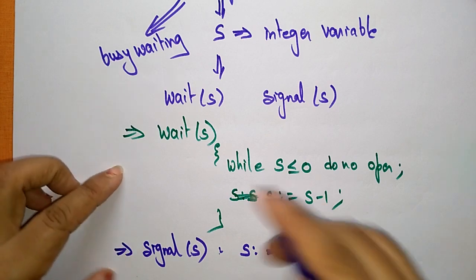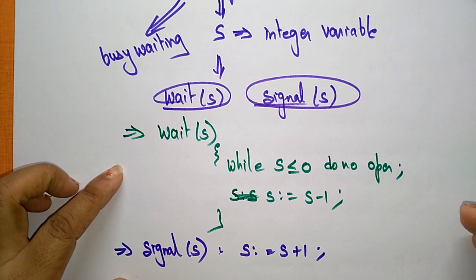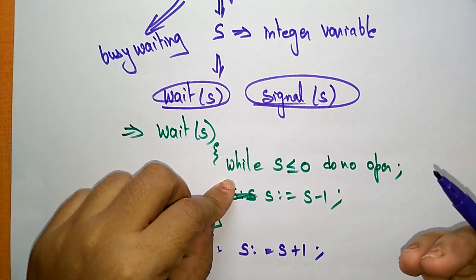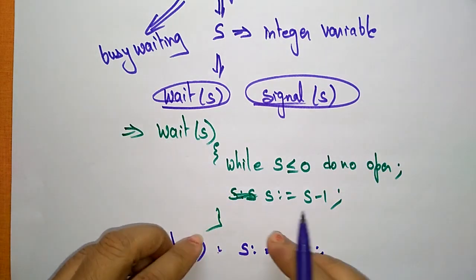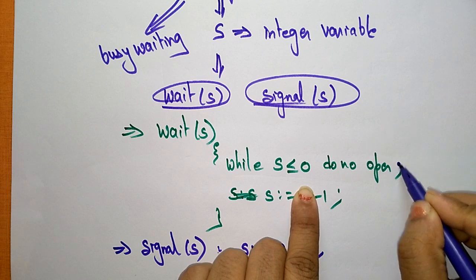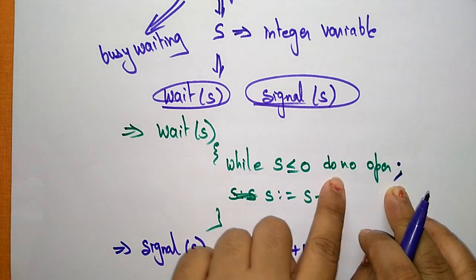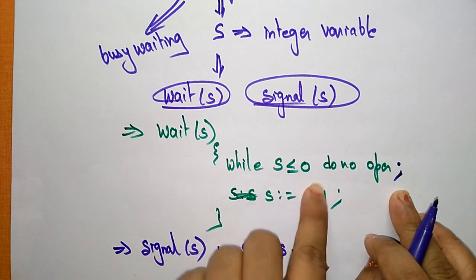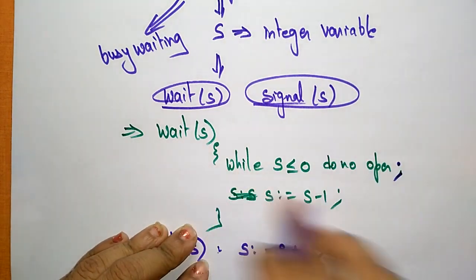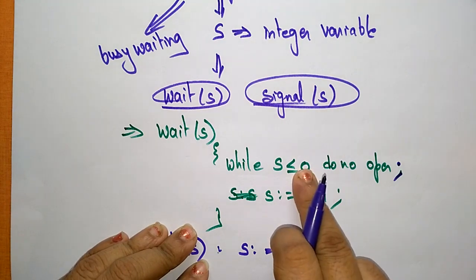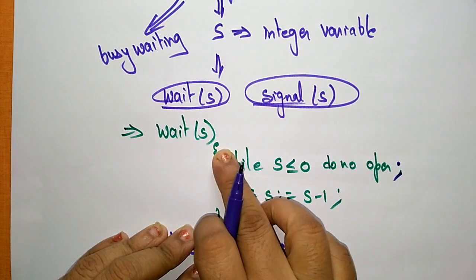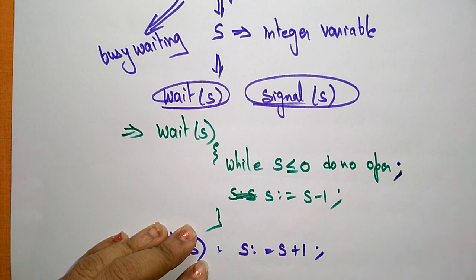Why is the semaphore using these two atomic operations, wait and signal? Whenever the while condition is satisfied, it will execute the program. But here there is no program because it ends with a semicolon — while S less than or equal to 0, do no operation. So whenever the condition is satisfied, it does no operation and continuously loops, meaning it is in a busy waiting state. We have to ensure this condition does not get satisfied, so the process will execute without busy waiting.